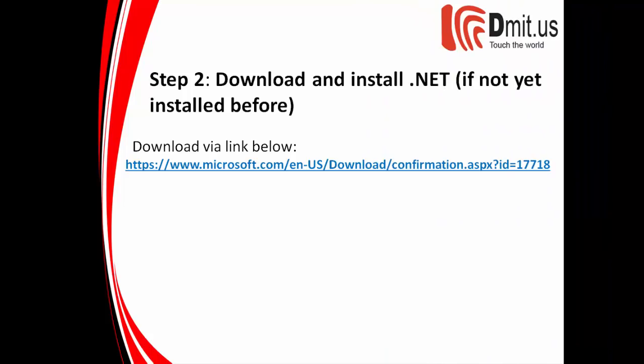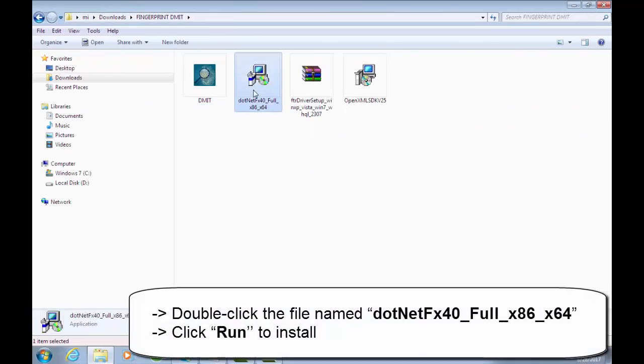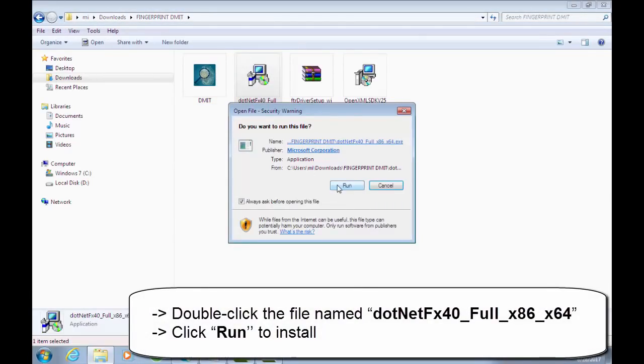Next, Step 2: download and install .NET, if not yet installed before. Download via the link below. Follow me. Double-click the file named .NET FX40 for x86/x64, then click Run to install.